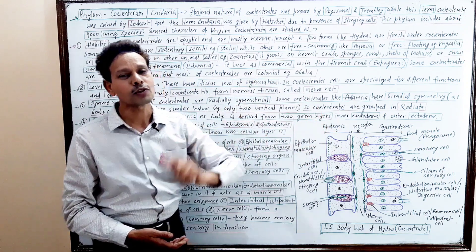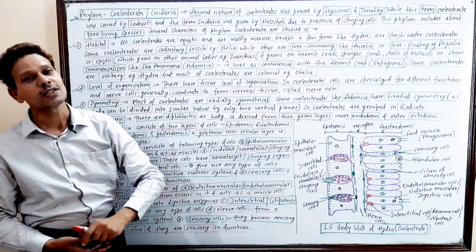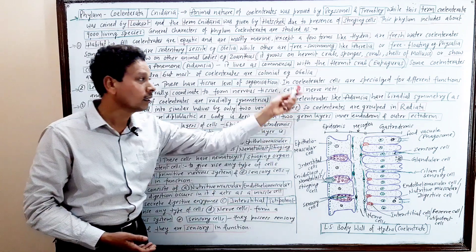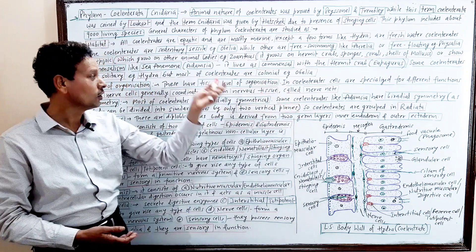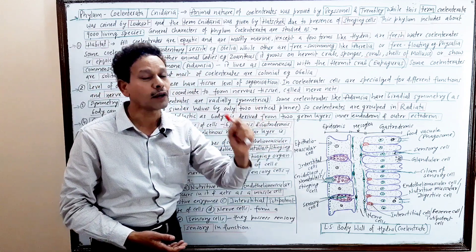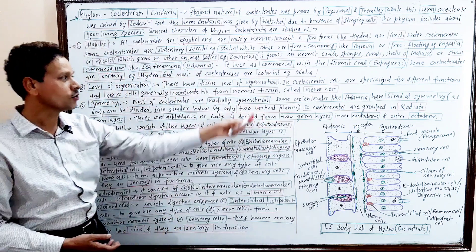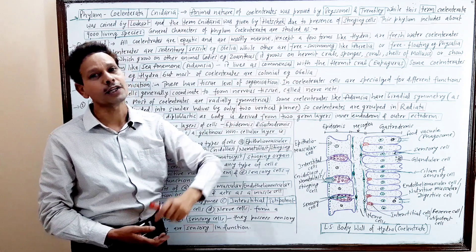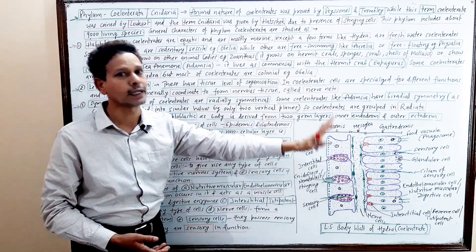Note this point, B.Sc. students — it is a common exam question. Nerve net means the nerve cells coordinate to produce nervous tissue. They show tissue level of organization but no organs or organ systems.